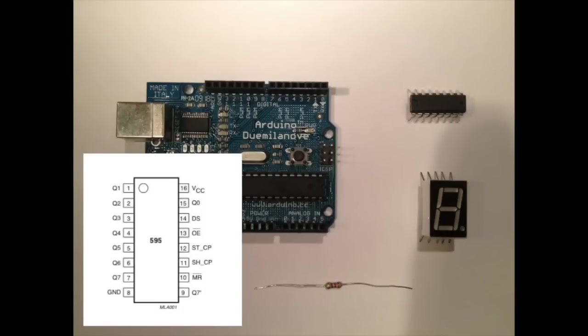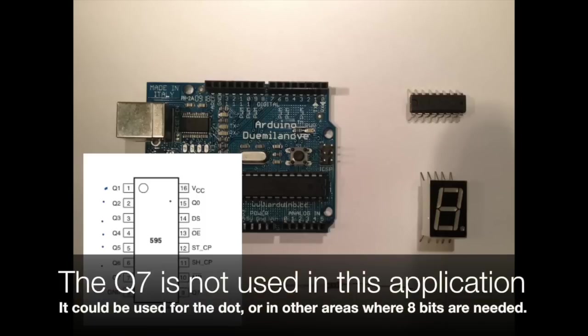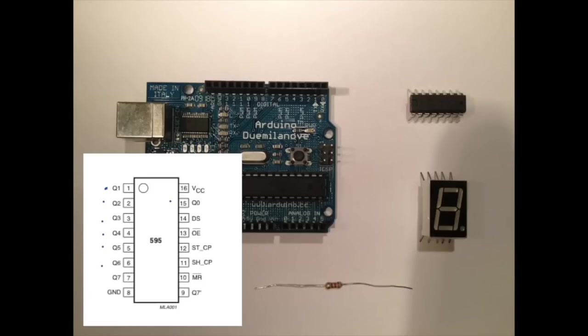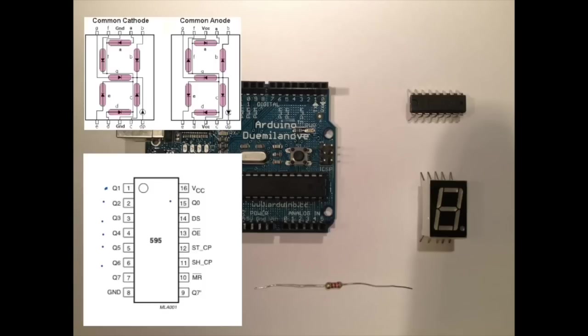But first things first, let's connect this. We start by taking a look at the output pins of the 595, and we see it has the same Q0 through Q6 as the 4511 has. These pins from 0 to 6 are the ones that you're supposed to connect to the LED A through G. So once again this will be A, B, C, D, E, F, and G of the LED display. So let's start by connecting them.